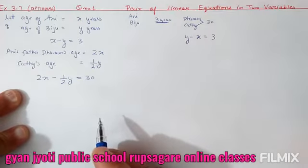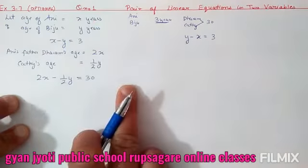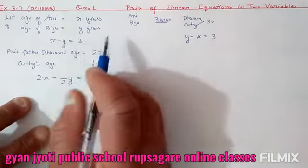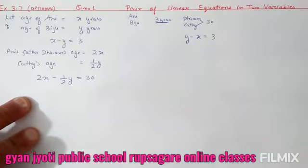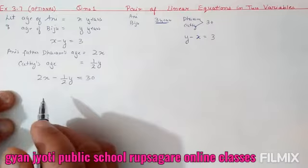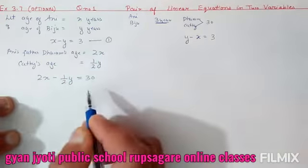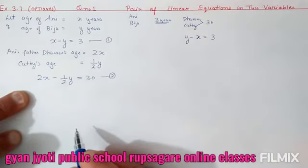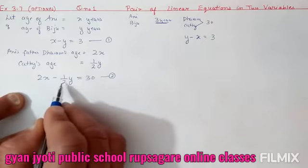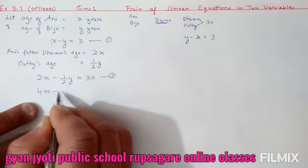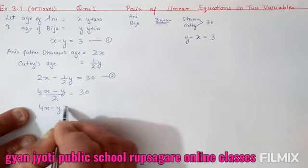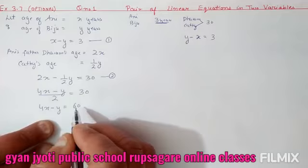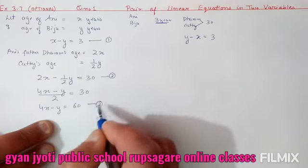Yahan se cases bane hain. Ab is sawaal ko do part mein karenge. Pehle equation: x - y = 3 (Ani bada maana). Yeh equation 1 hai. Doosri equation: 2x - y/2 = 30. Isse multiply karke simplify karein toh 4x - y = 60. Yeh final equation 2 ban gayi. Ab 1 aur 2 se x, y ki value nikalni hai elimination method se.